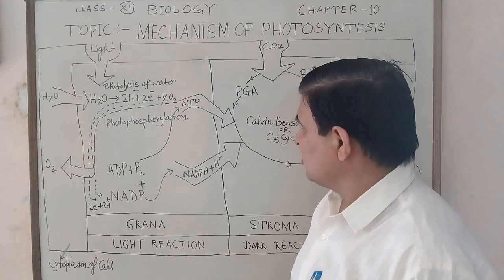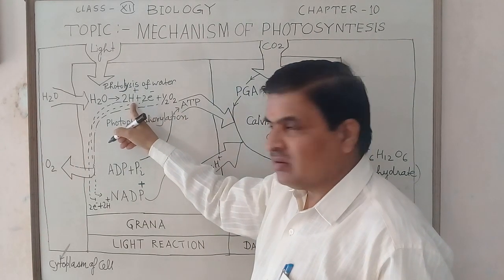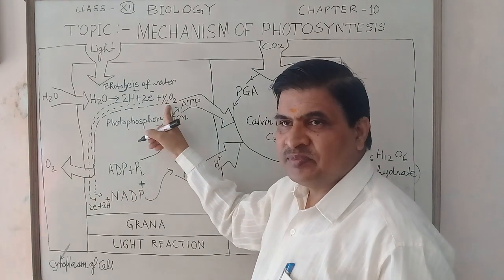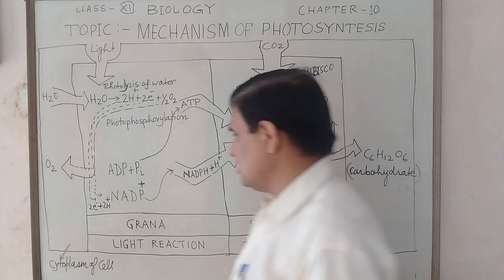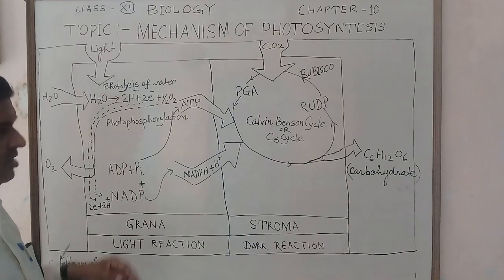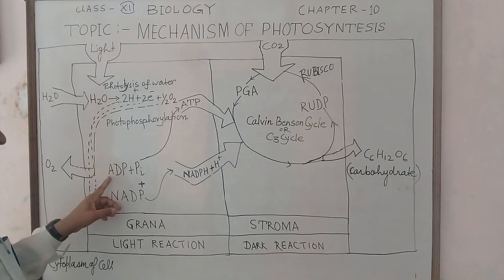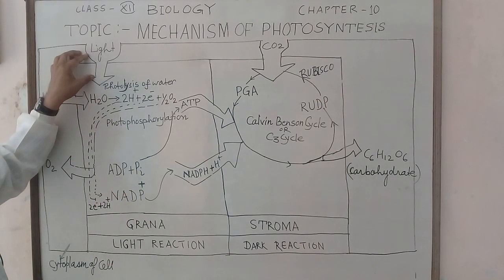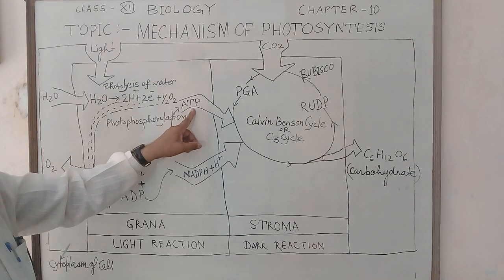In Photosystem II, the water molecule breaks into hydrogen ions, electrons, and oxygen gas is released. This oxygen gas comes out from the chloroplast into the cytoplasm of the cell. Photophosphorylation also occurs, in which adenosine diphosphate combines with inorganic phosphate in the presence of photons, and formation of ATP — adenosine triphosphate — takes place.